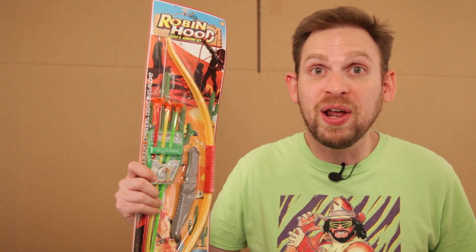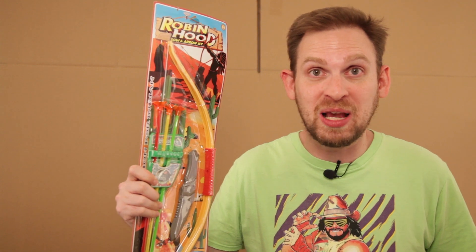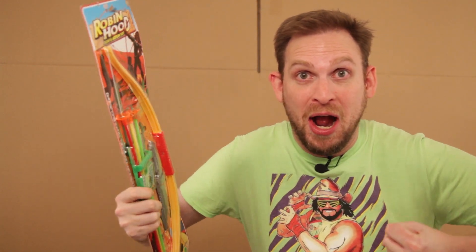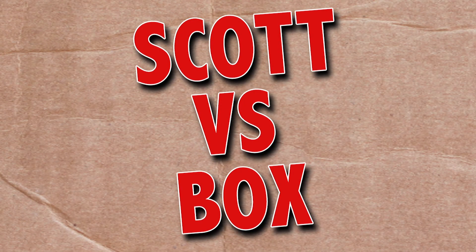On this episode of Scott vs. Box, I open up Robin Hood bow and arrow set. This makes the little John in me feel like a real big John. It's a reference to Robin Hood. Scott vs. Box!